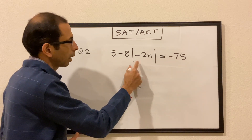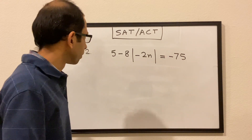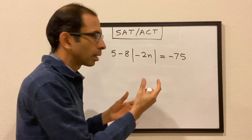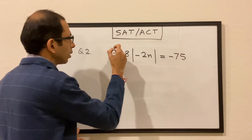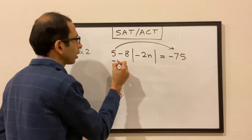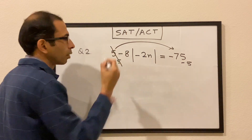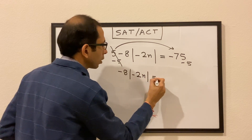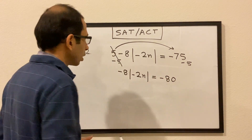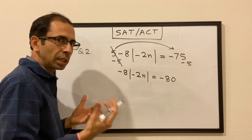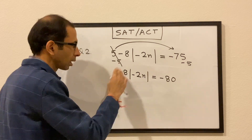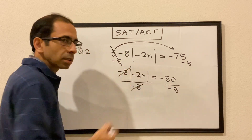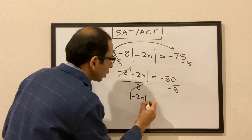Question 2: 5 minus 8 times absolute value of minus 2n is equal to minus 75. The concept remains the same — bring all other terms to the right side except the absolute value. We subtract 5 from both sides, getting minus 8 times absolute value of minus 2n equals minus 80. Then we divide both sides by minus 8, leaving absolute value of minus 2n equals 10.